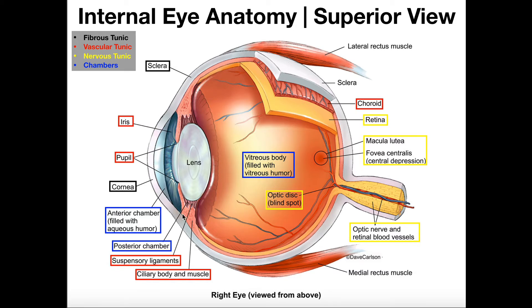A couple other things in this area: we have the anterior chamber and the posterior chamber. The anterior chamber is everything between the cornea and the iris — this space right here. It's filled with a watery substance called aqueous humor; 'humor' is a fancy term for fluid, so this is a watery fluid in the anterior chamber. The posterior chamber is everything between the iris and the lens — it's a little difficult to see here. It is also filled with aqueous humor.